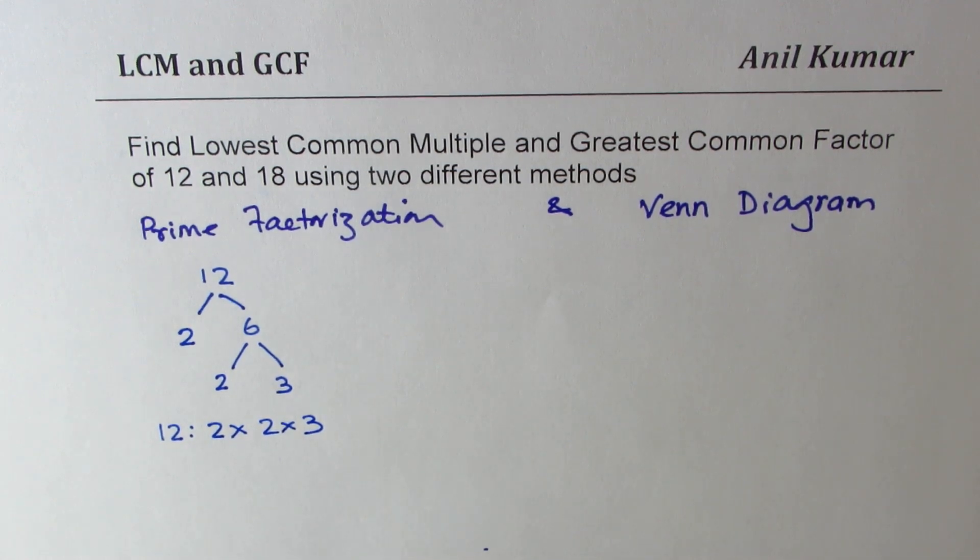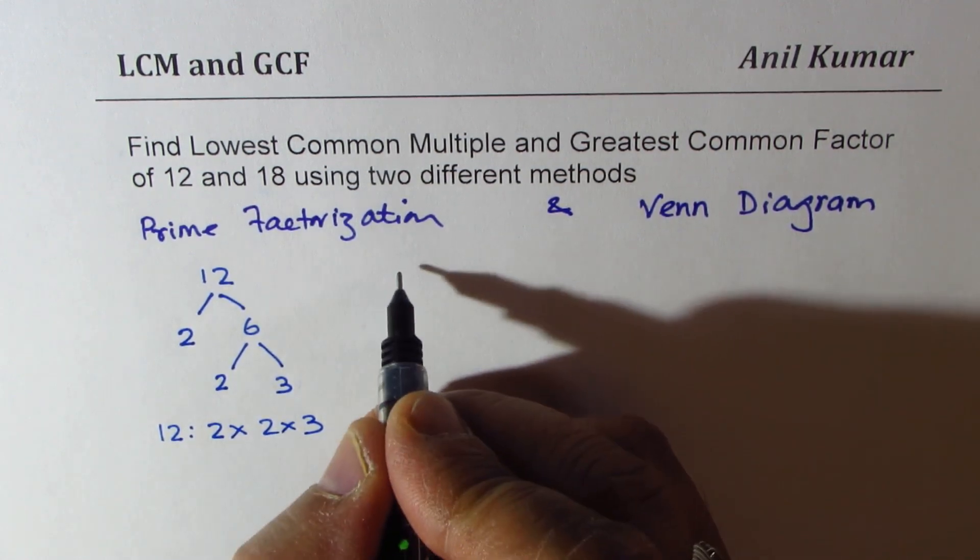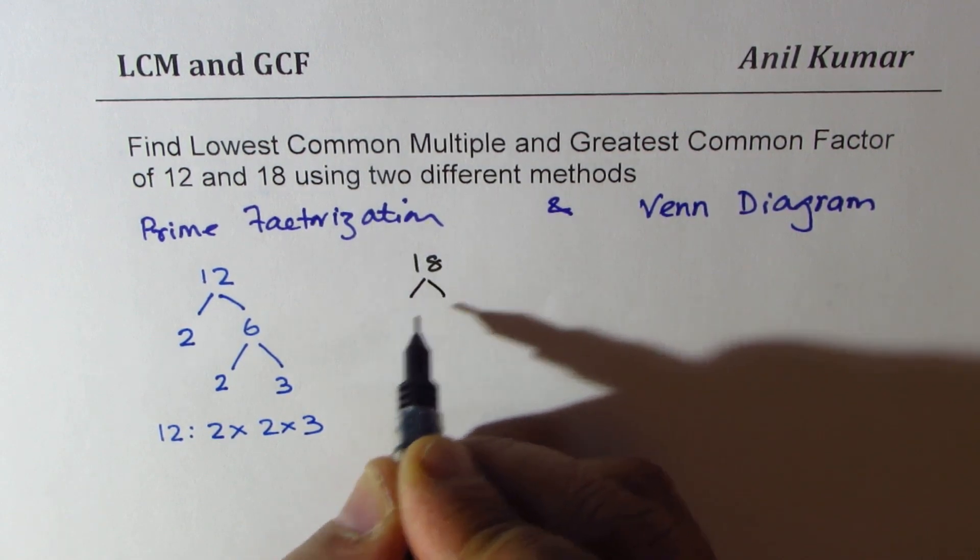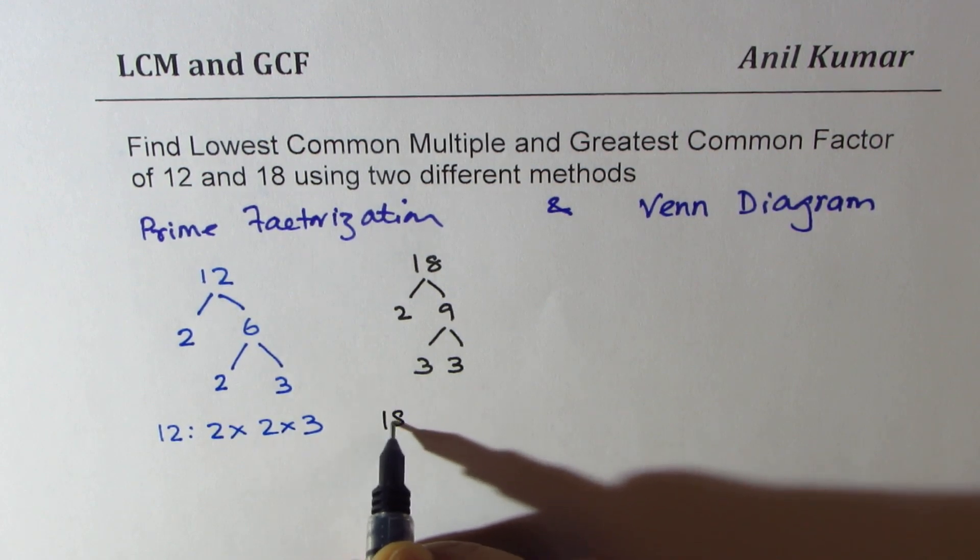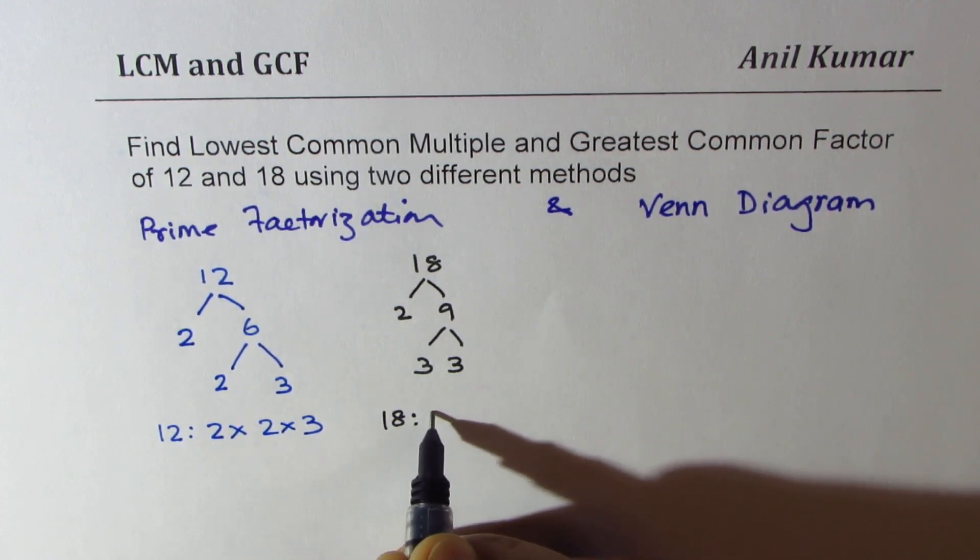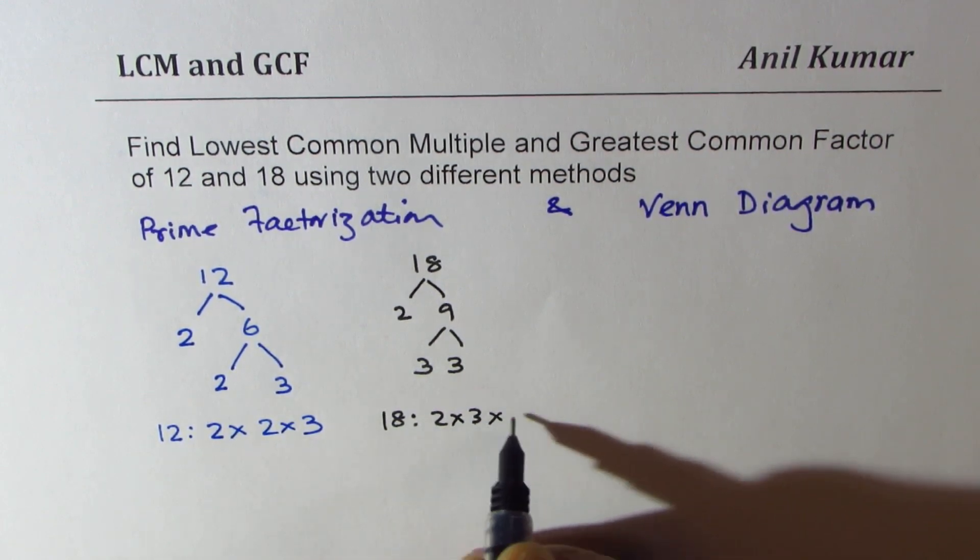Let's do the same thing for the number 18. 18 is 2 times 9, and 9 could be written as 3 times 3. So 18 equals 2 times 3 times 3.